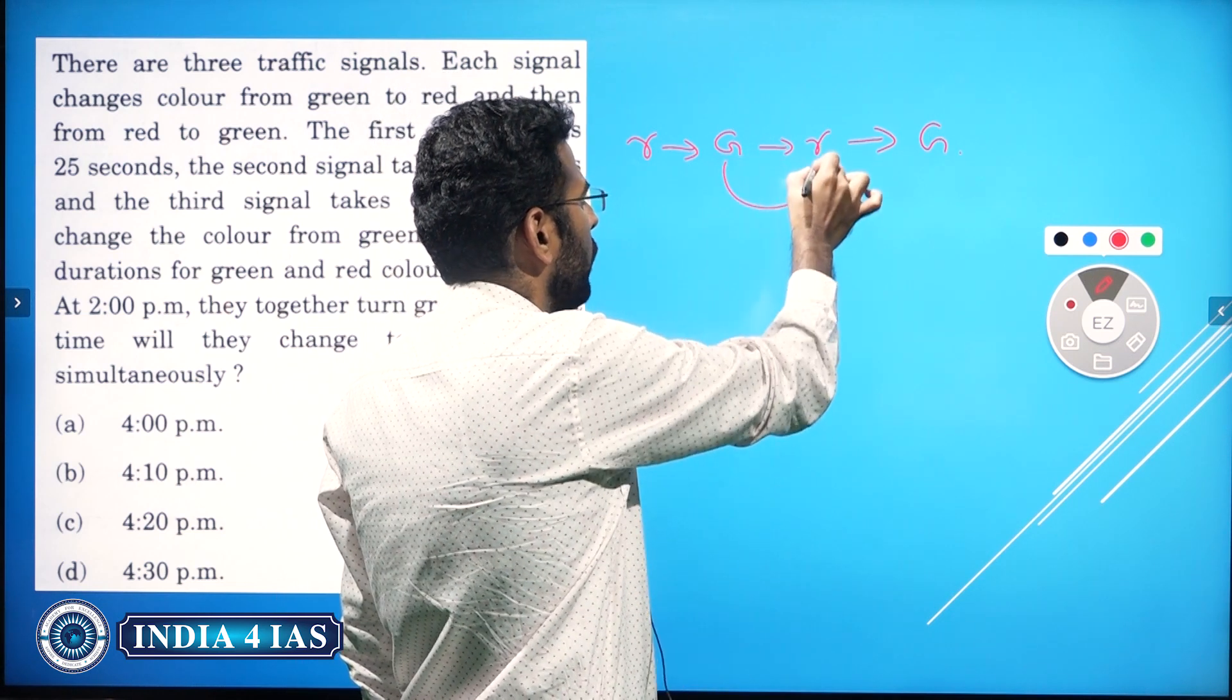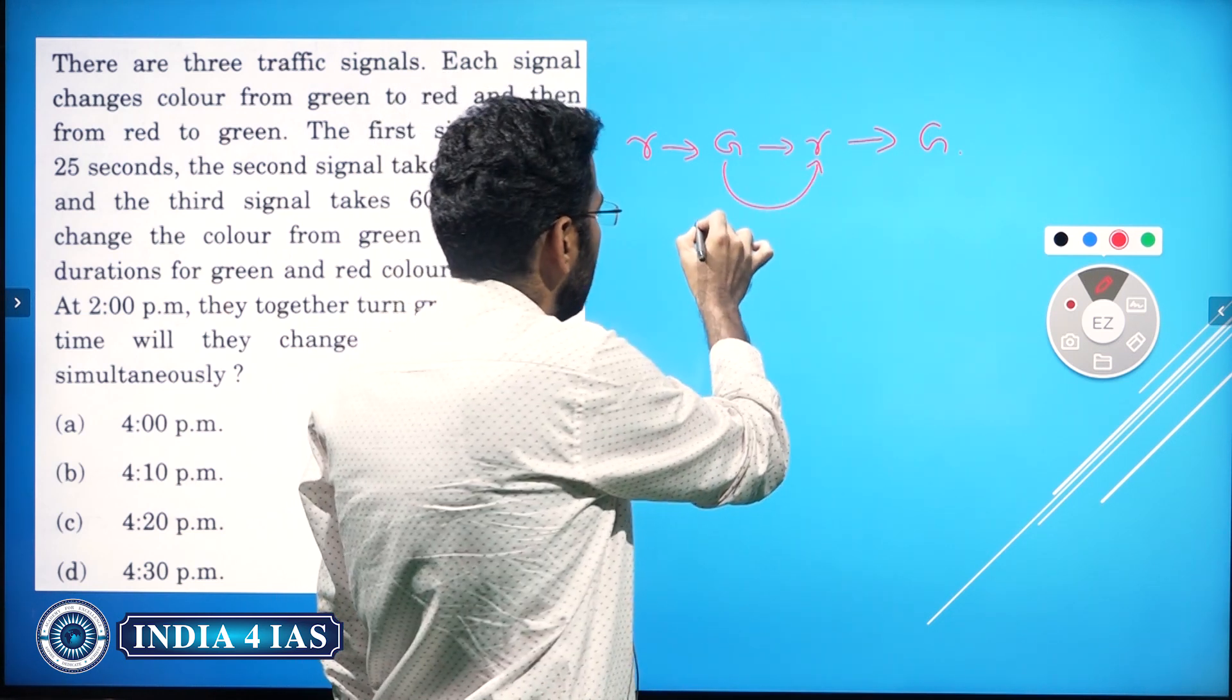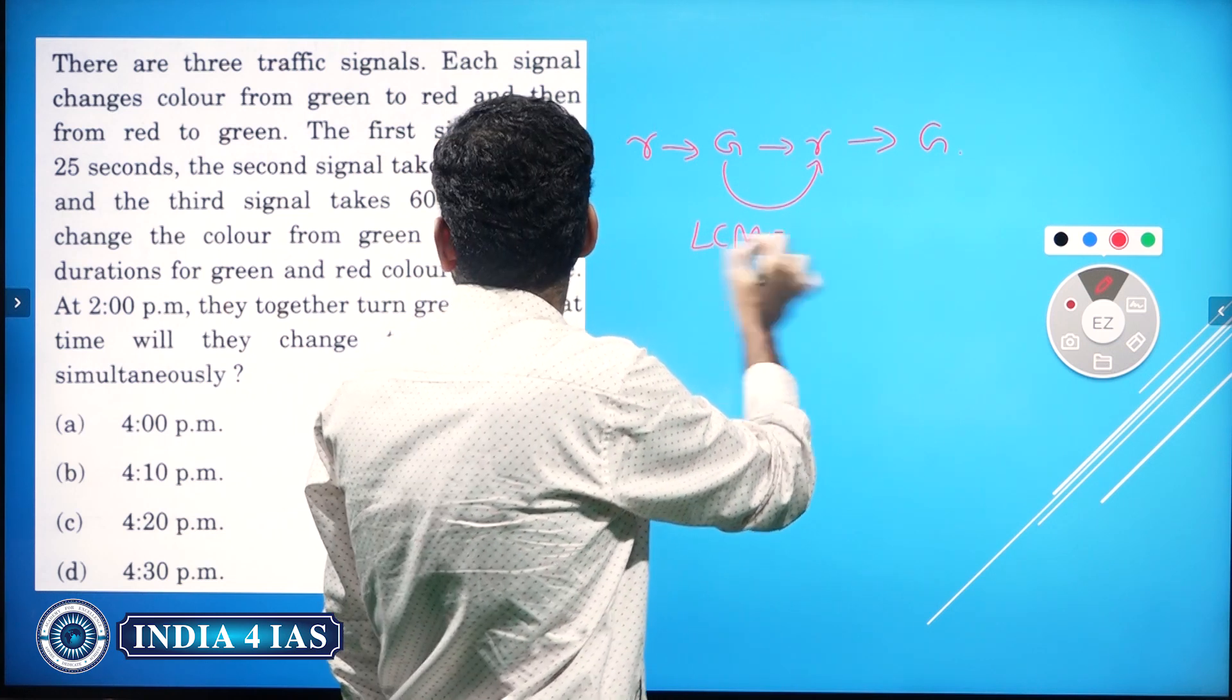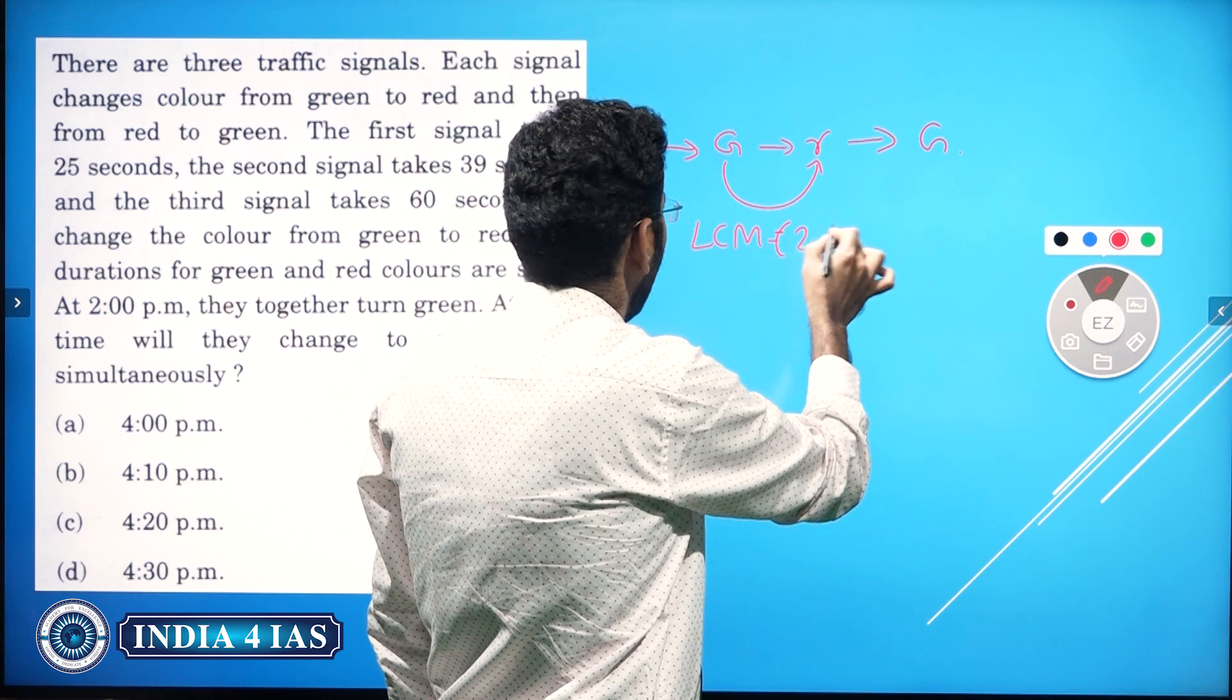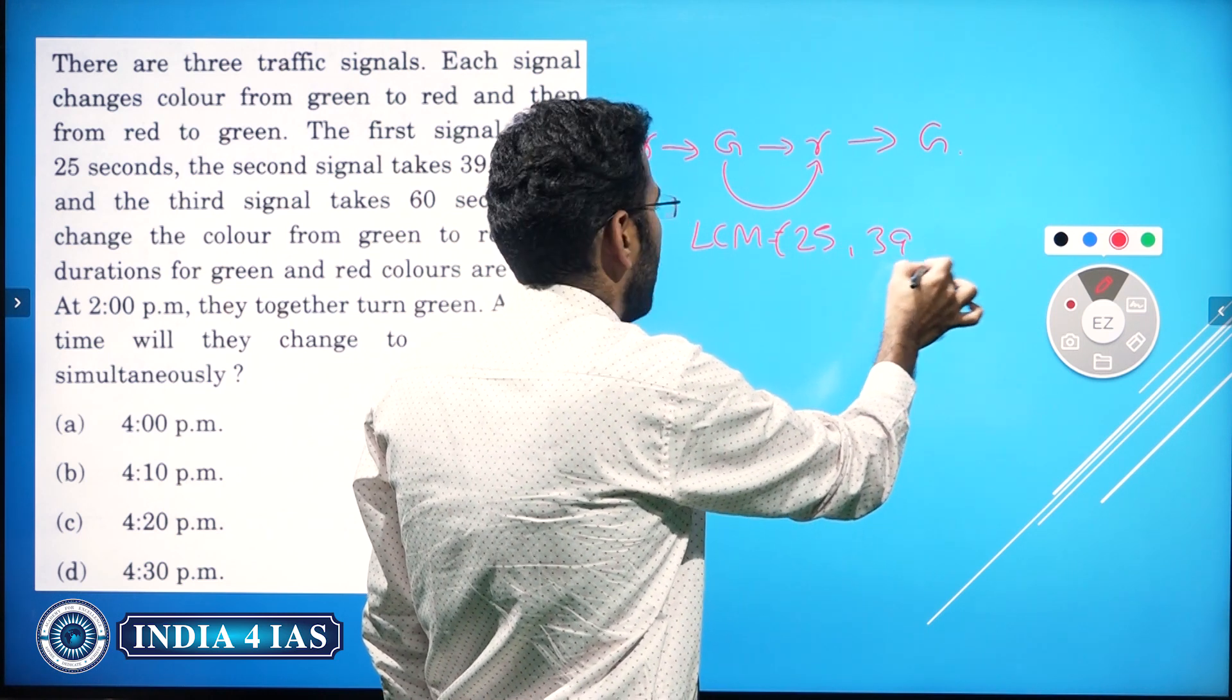To turn from green to red, we need to find the LCM of all these seconds: LCM of 25, 39, and 60 seconds.